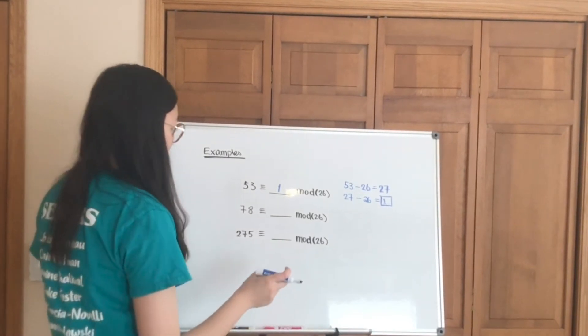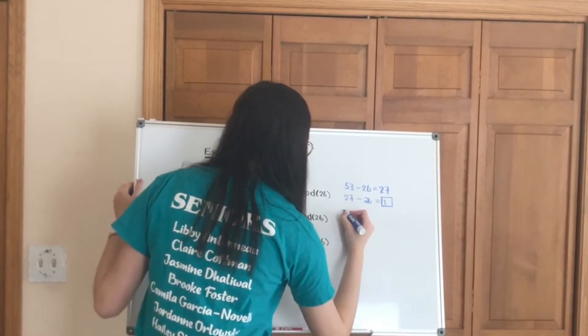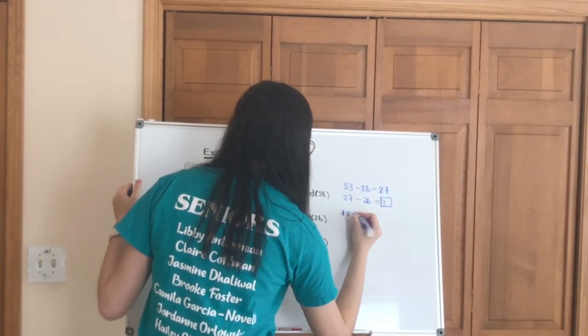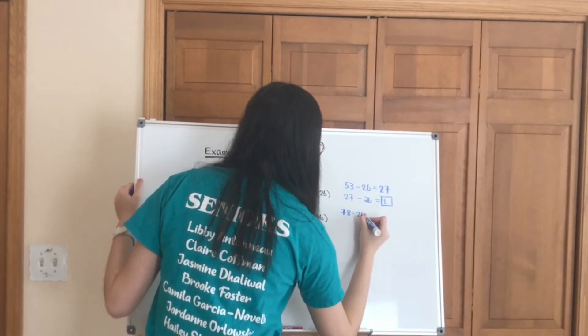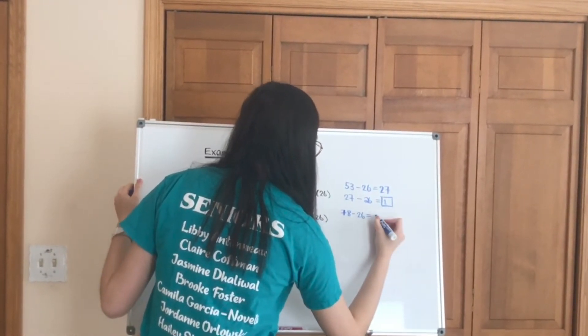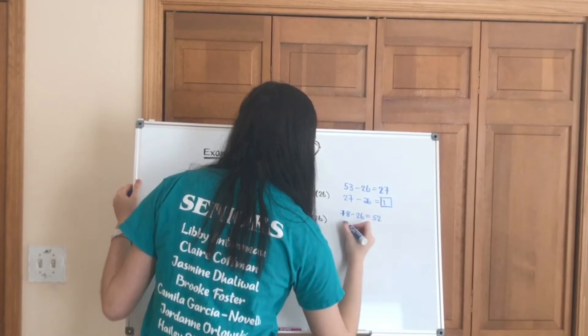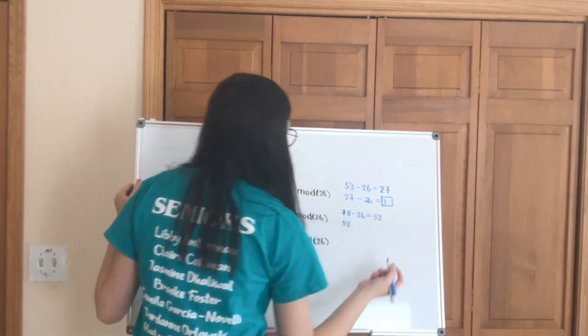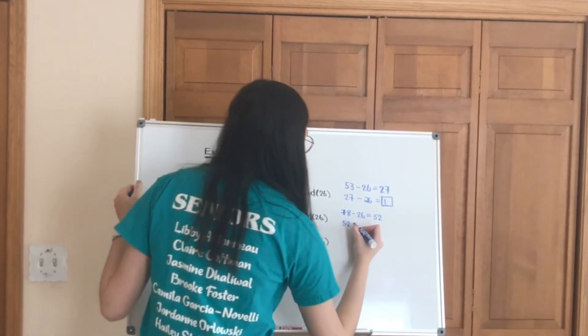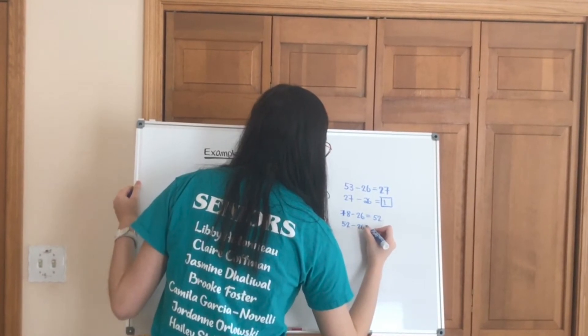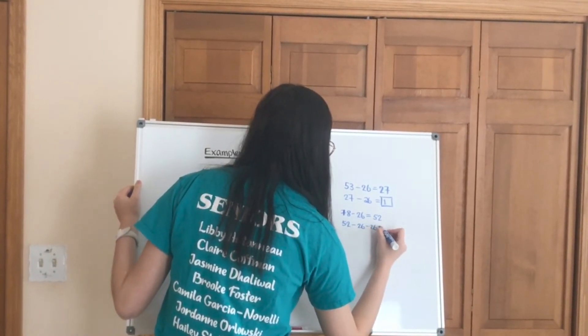Similarly, let's take a look at 78. So 78, we can take out 1 times 26, that gives us 52. And 52, if you know your math, we can know that there are two 26s in 52, and that gives us a remainder of 0.